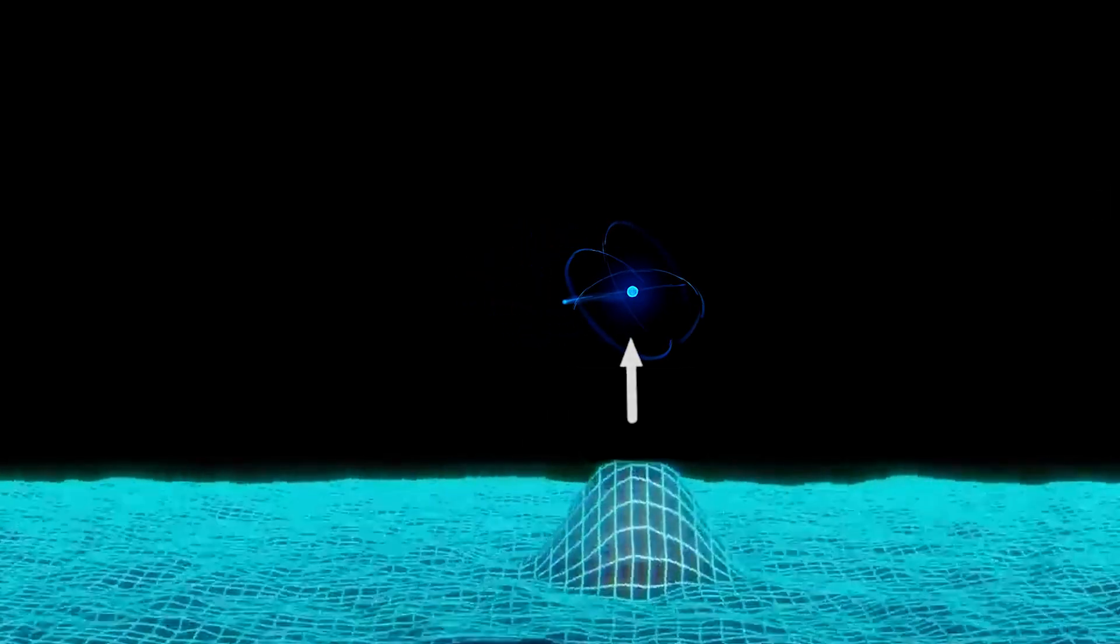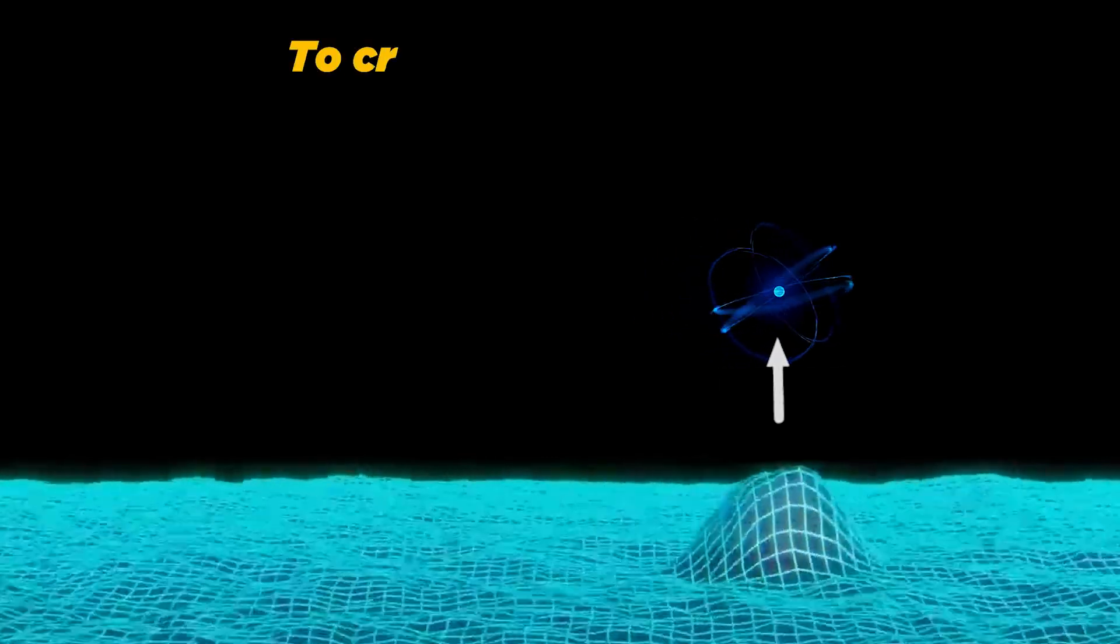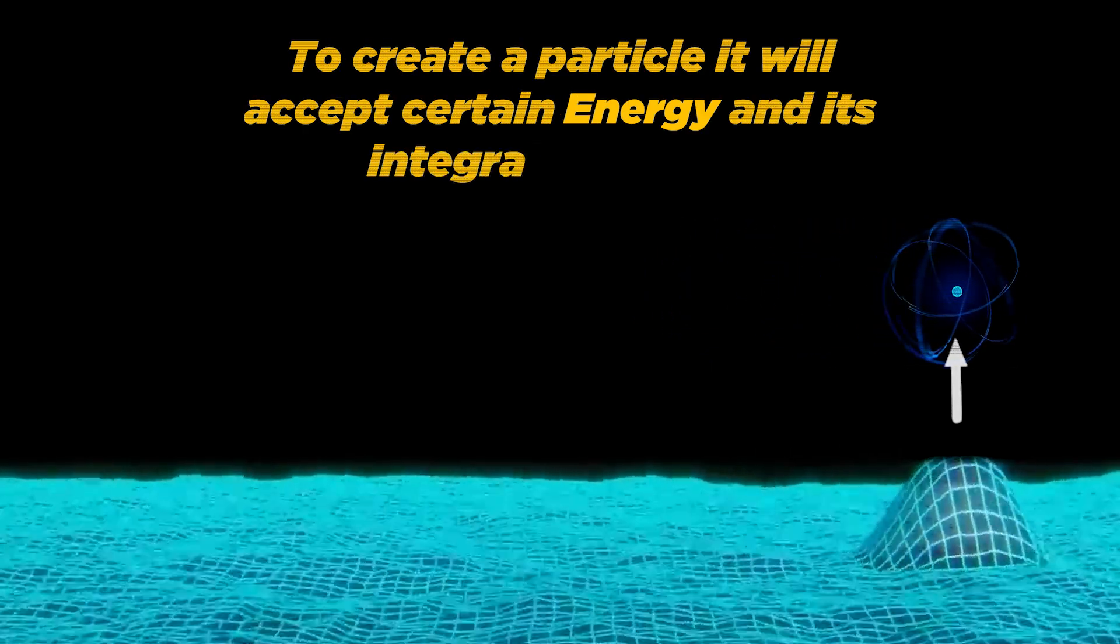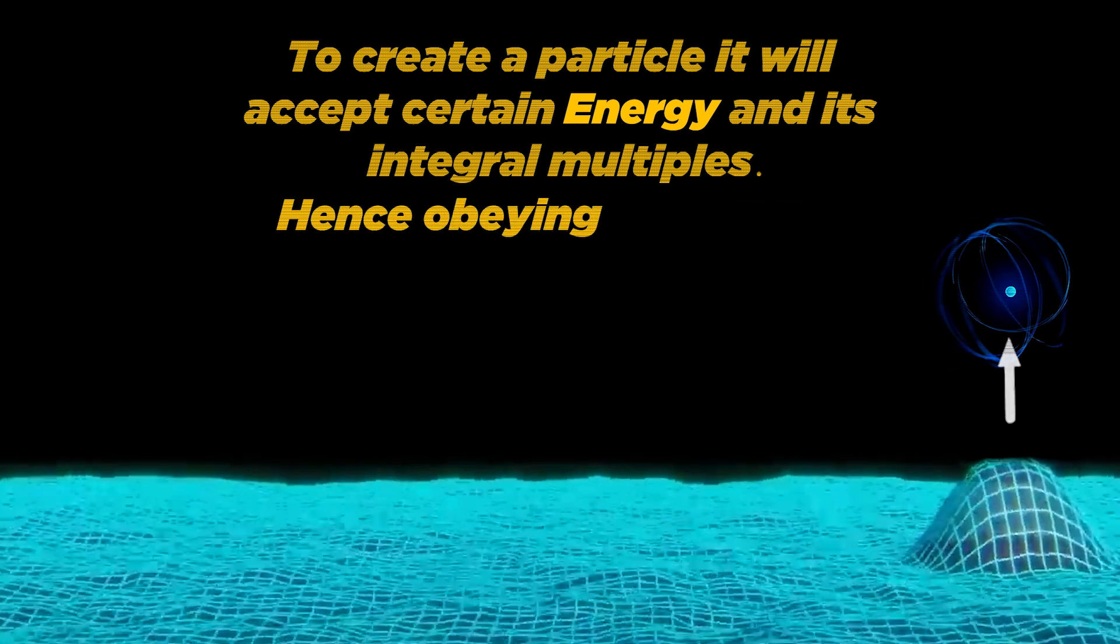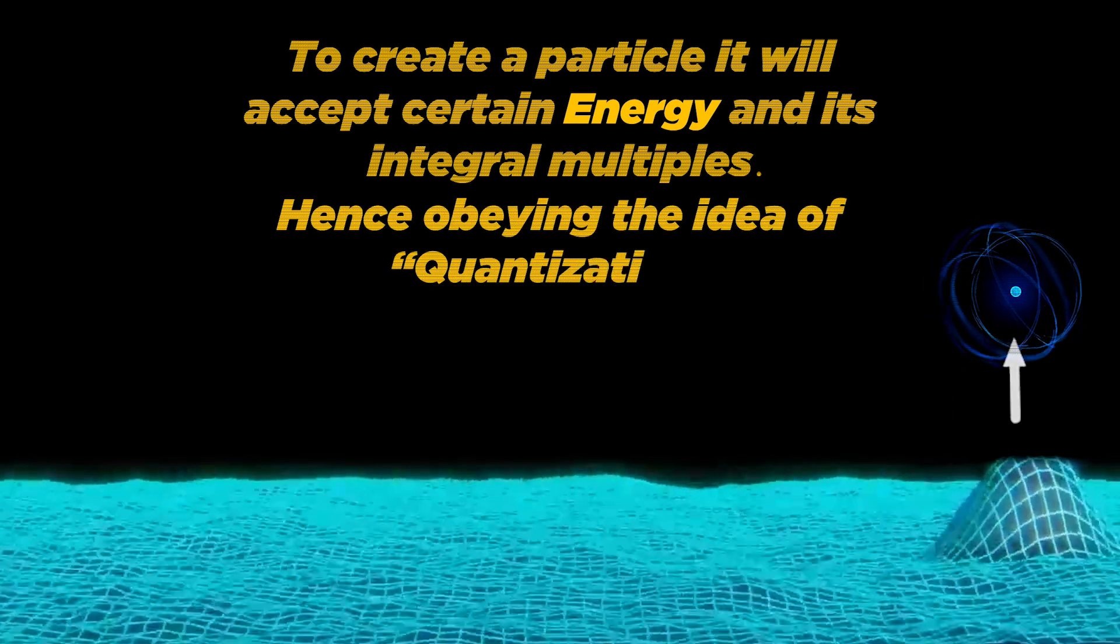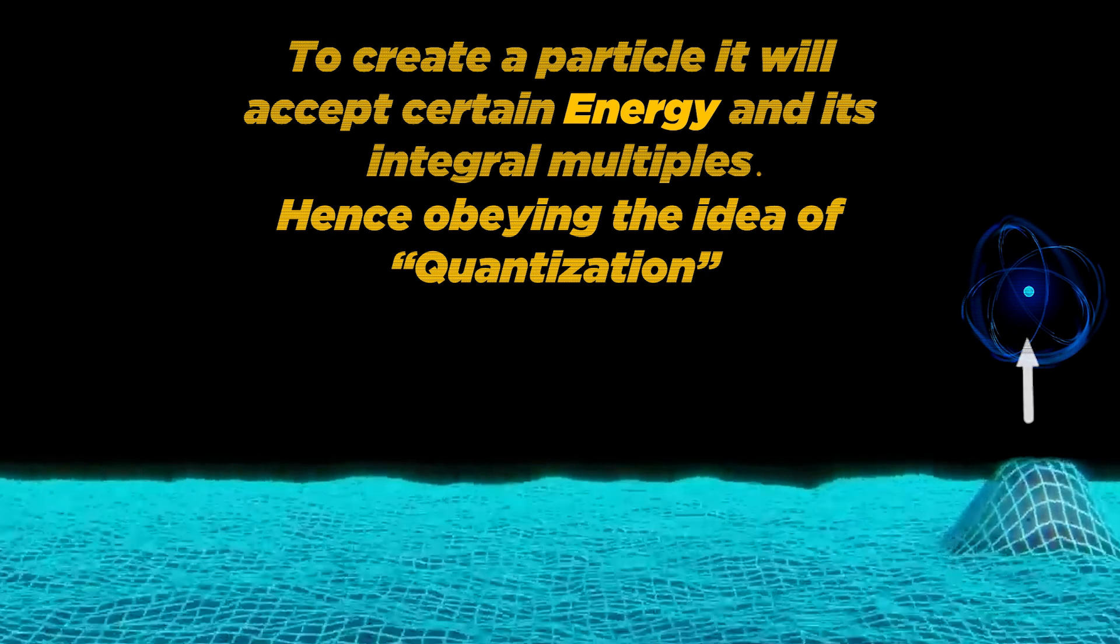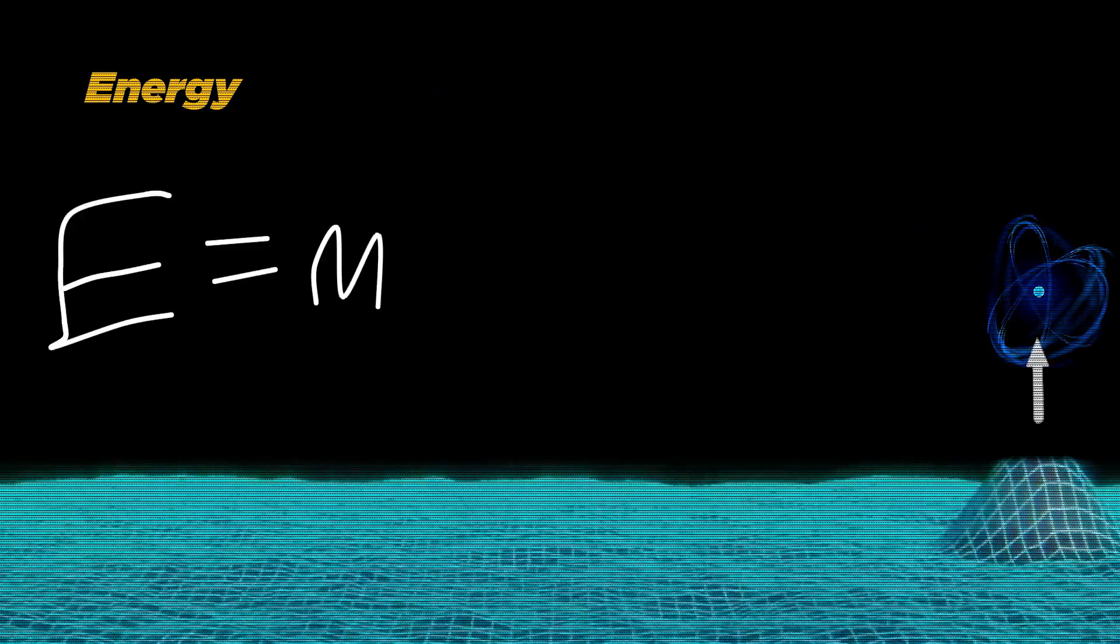The point in a field where we give energy looks like a particle. And as energy propagates through the field, it looks like the particle is moving. As you might know, fields require energy to create particles. They won't accept any amount of energy. The field will accept only a certain amount of energy and its integral multiples. This energy is decided by the mass of a particle.